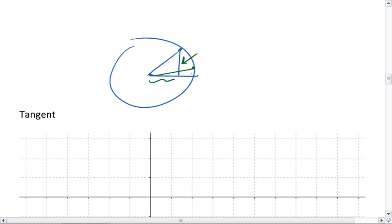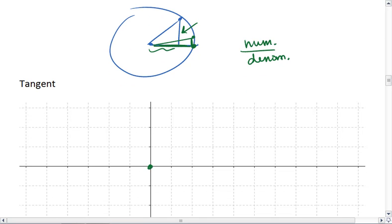As we start really low, we have a very small vertical height and a very long horizontal height. Our numerator is very small and our denominator is very big at the beginning. In fact, at the very beginning, we have no vertical height, which puts tangent at 0.